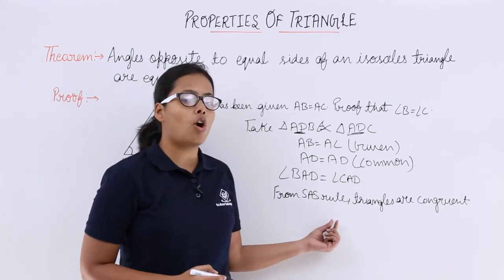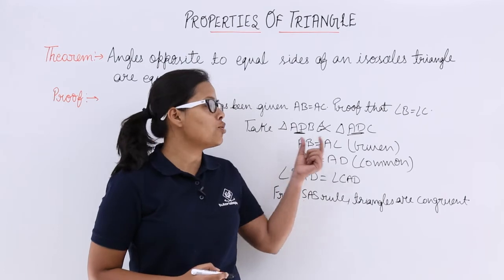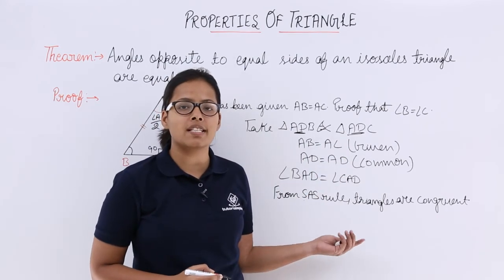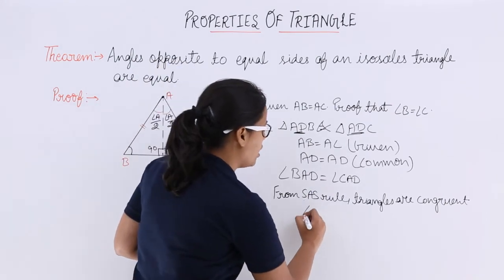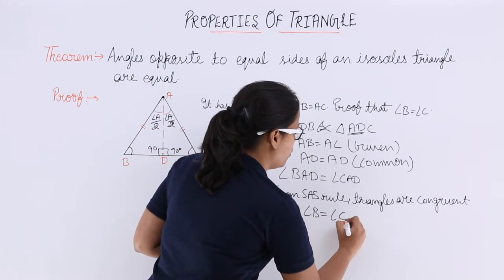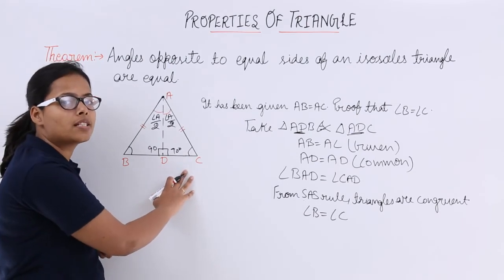So when triangles are congruent, what does this suggest? It suggests that these two triangles will be similar, which means their size and shape will be the same. So angle B will be equal to angle C because these two triangles have to be similar.